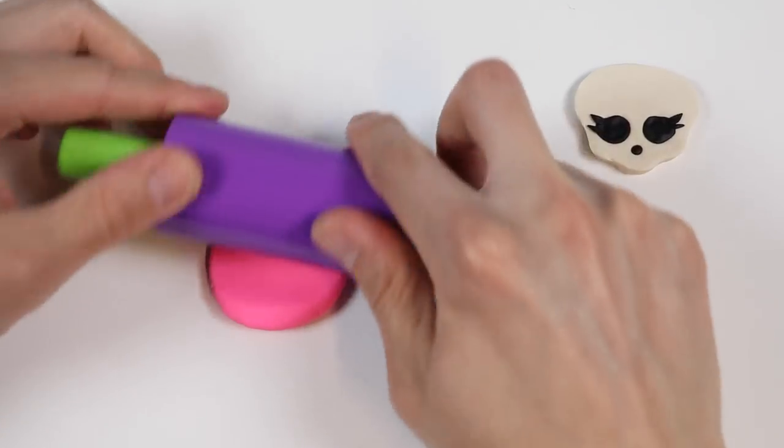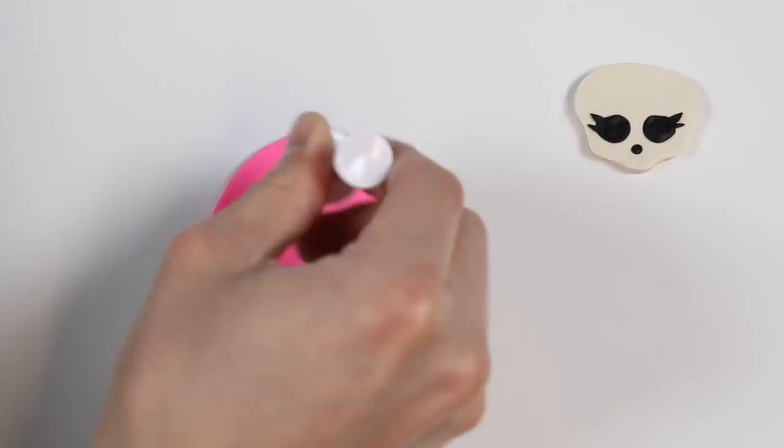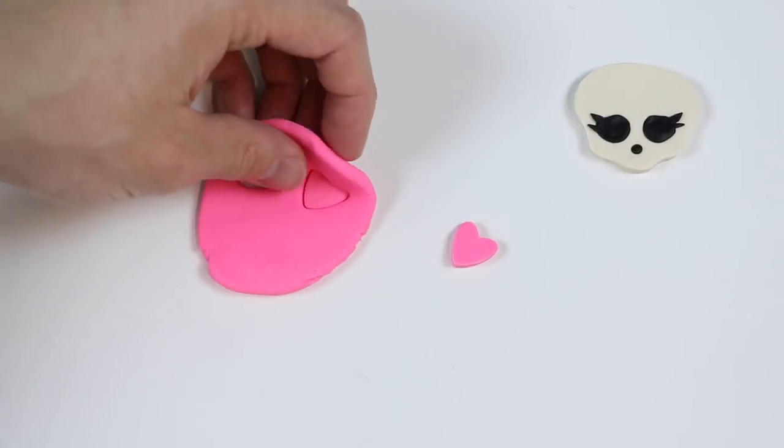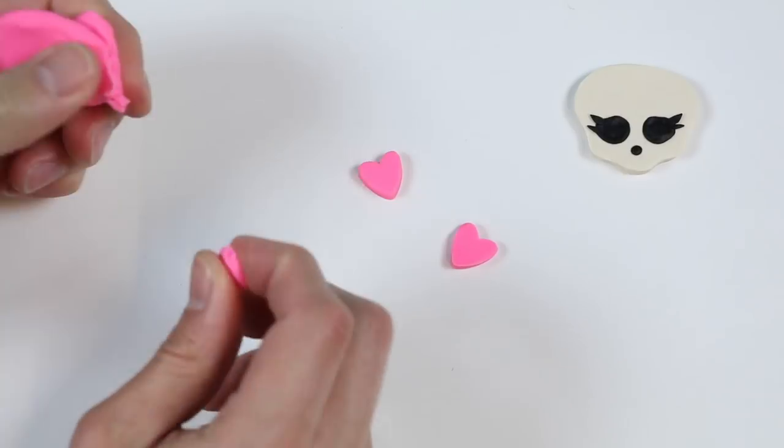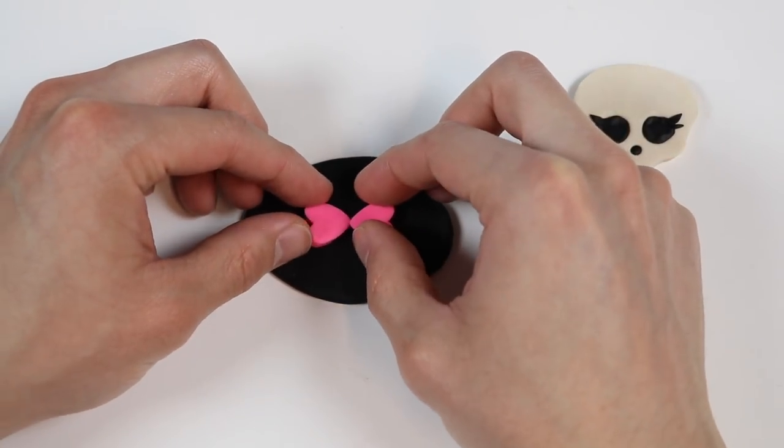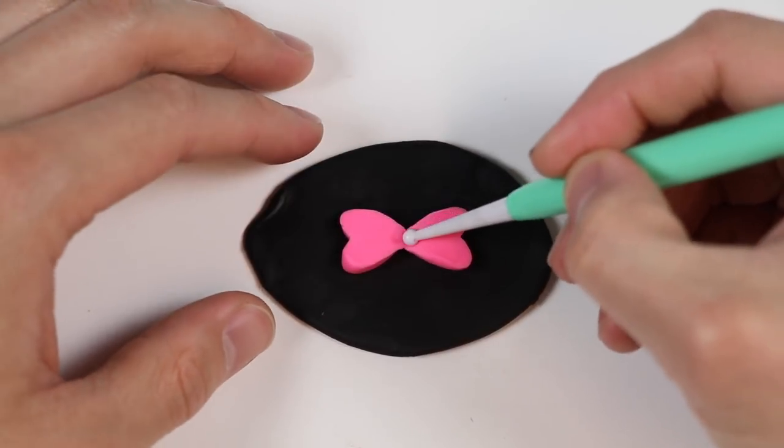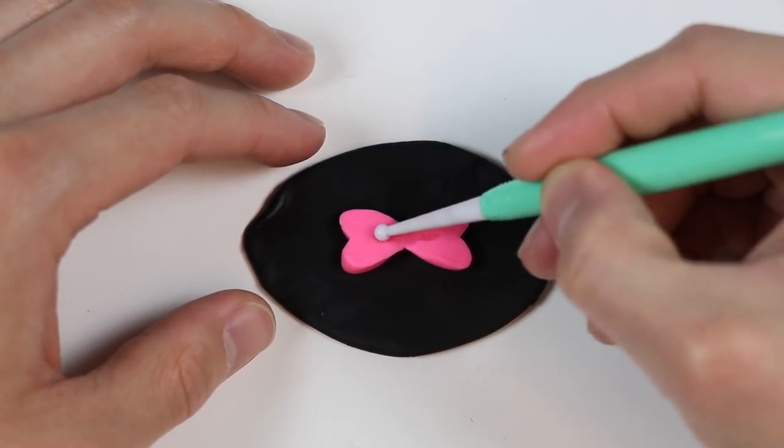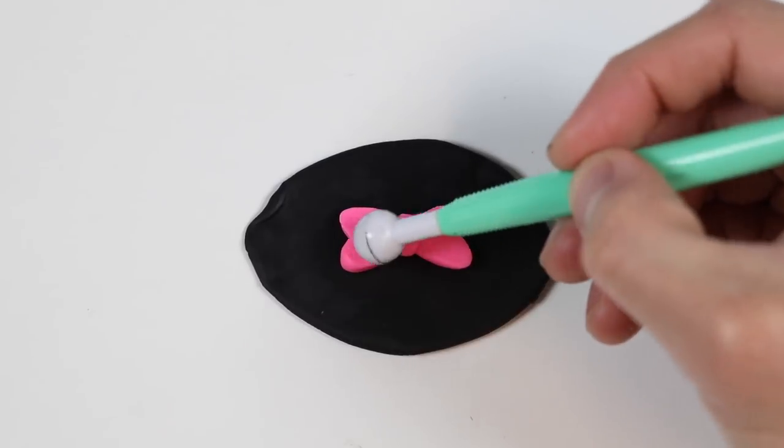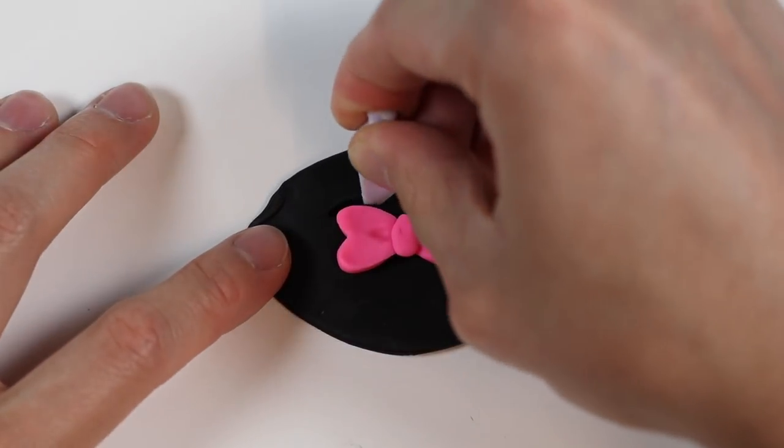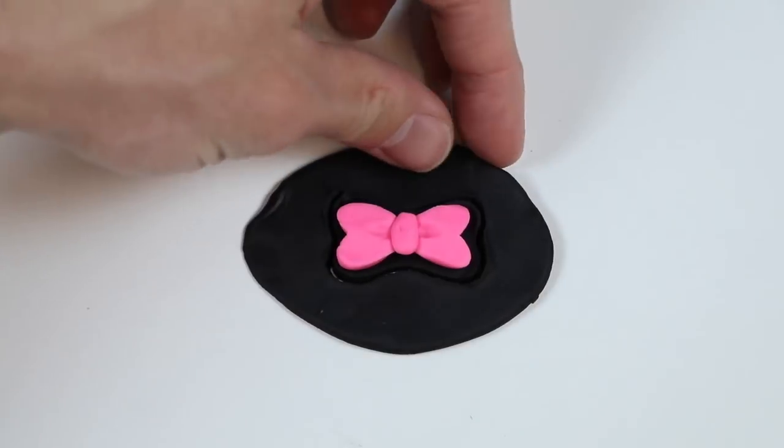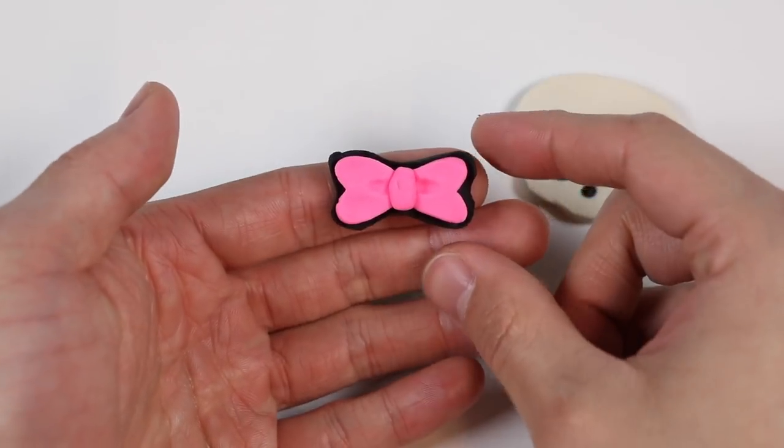Now let's roll out some pink Play-Doh to make the bow. We're going to need two heart shapes and a tiny piece of pink Play-Doh rolled up in a ball. Alright, let's put this bow together. Place it on top of this black Play-Doh so that we can make a black outline as well. Cut it out. That is one good-looking bow, let's put it on our ghoul.